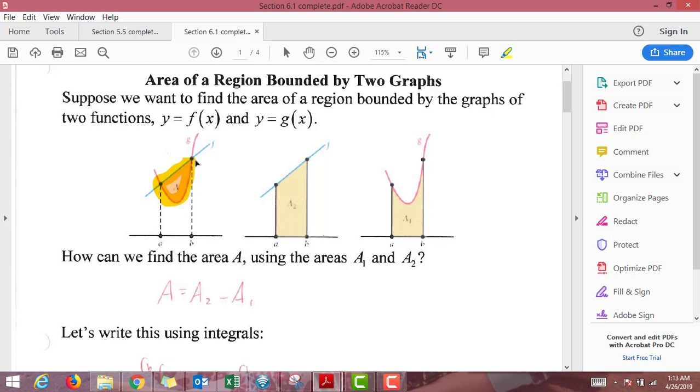So notice that if I wanted this area that gets closed in by where f and g cross, then if I found all of the area that's underneath f down to the x-axis, which is labeled A_2,